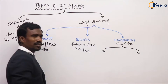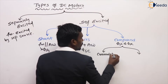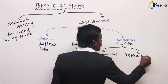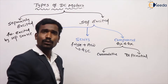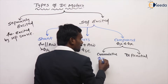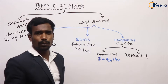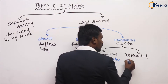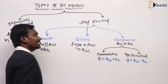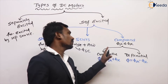Compound motors are two types: one is called cumulative compound motor and the next one is differential compound motor. In a cumulative compound motor, the flux is the sum of the two fluxes. If the flux is the difference of two fluxes, that is called differential compound motor, and there is no extra classification on this.